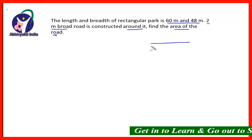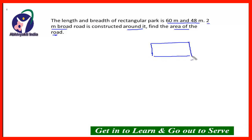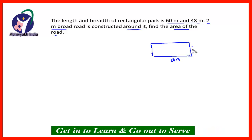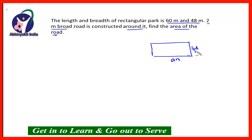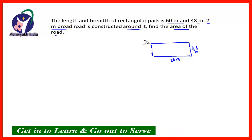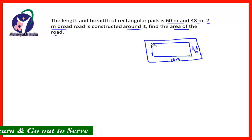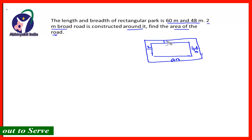There is a rectangular park of 60 meter length and 48 meter width. Around it, a road is constructed and the width of the road is 2 meter — 2 meter on this side, 2 meter on this side, 2 meter on this side, and 2 meter on this side. We have to find the area of the road.